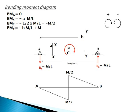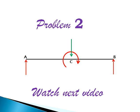Ra and Rb act in opposite directions at distance L, forming a couple that balances the applied moment M. The bending moment diagram shows this jump at C. In the next video, we will solve a similar problem but with a point load at the same location C instead of a moment. Thank you for watching.